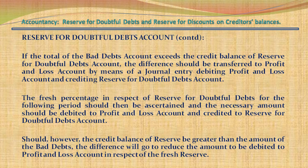If the total of the bad debts account exceeds the credit balance of Reserve for Doubtful Debts Account, the difference should be transferred to Profit & Loss Account by debiting Profit & Loss Account and crediting Reserve for Doubtful Debts Account. The fresh percentage in respect of Reserve for Doubtful Debts for the following period should then be ascertained, and the necessary amount should be debited to Profit & Loss Account and credited to Reserve for Doubtful Debts Account. Should the credit balance of Reserve be greater than the amount of bad debts, the difference will go to reduce the amount to be debited to Profit & Loss Account in respect of the fresh Reserve.